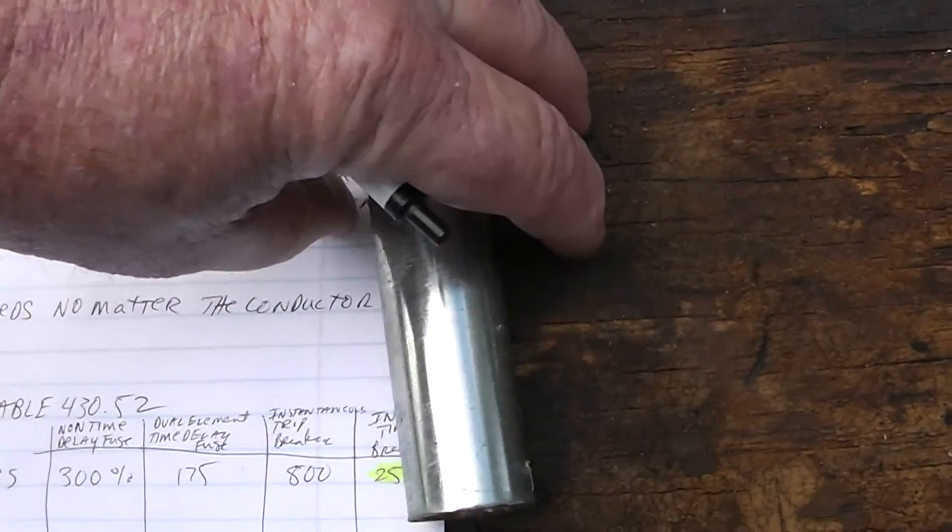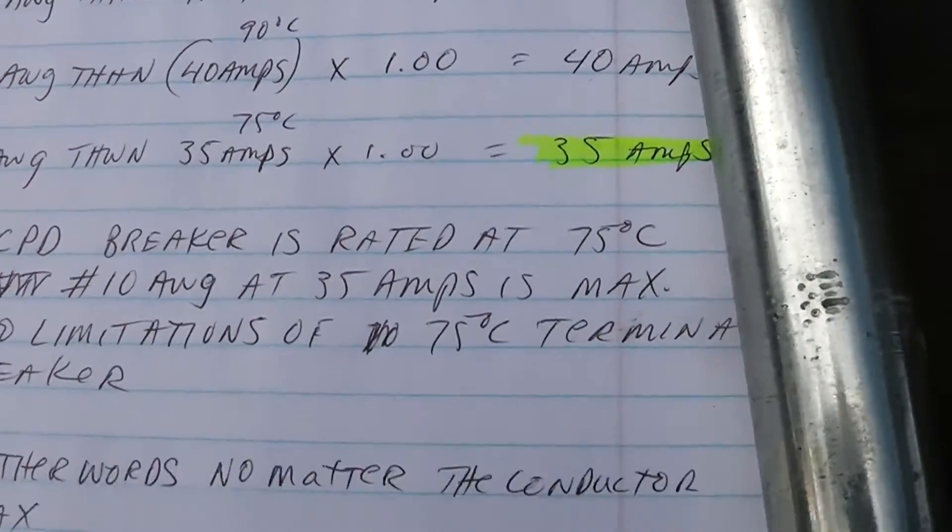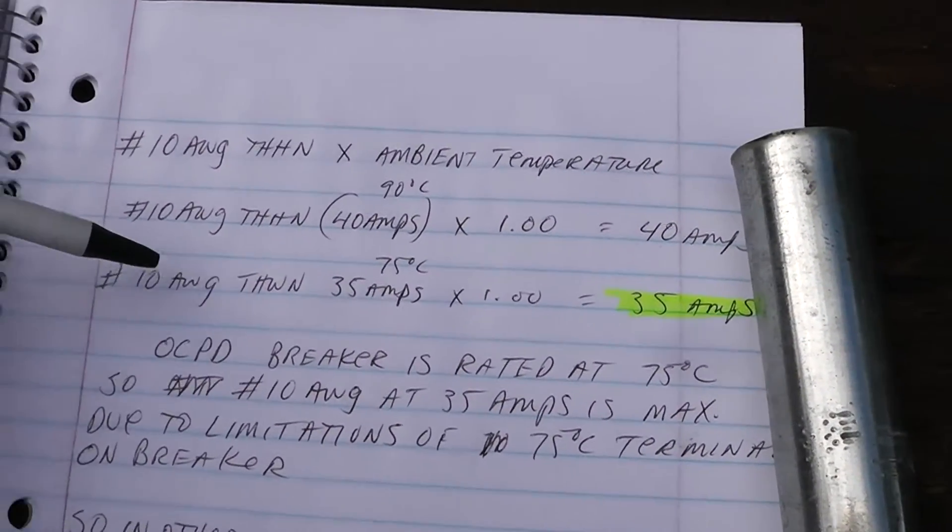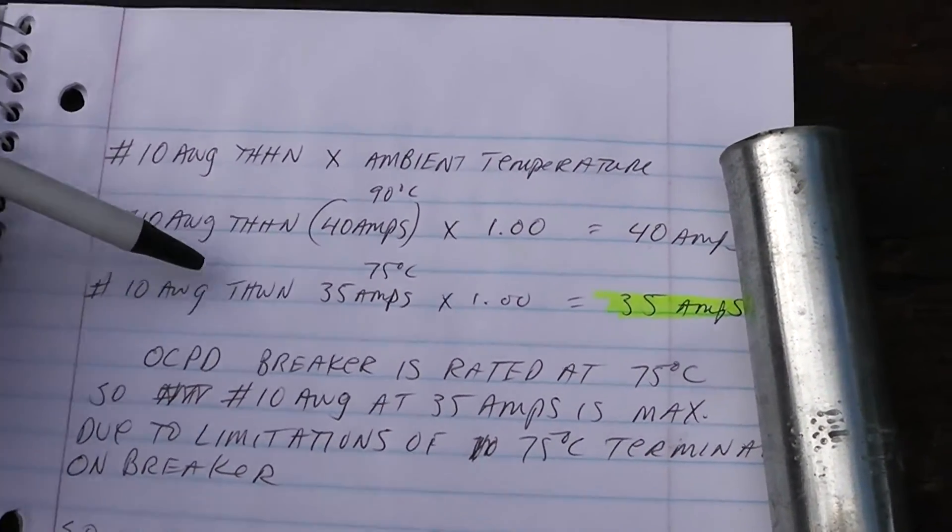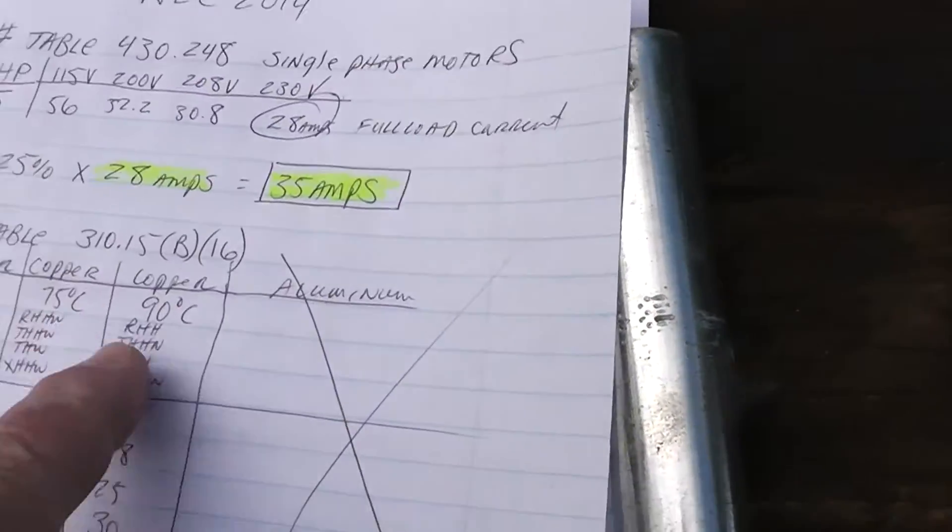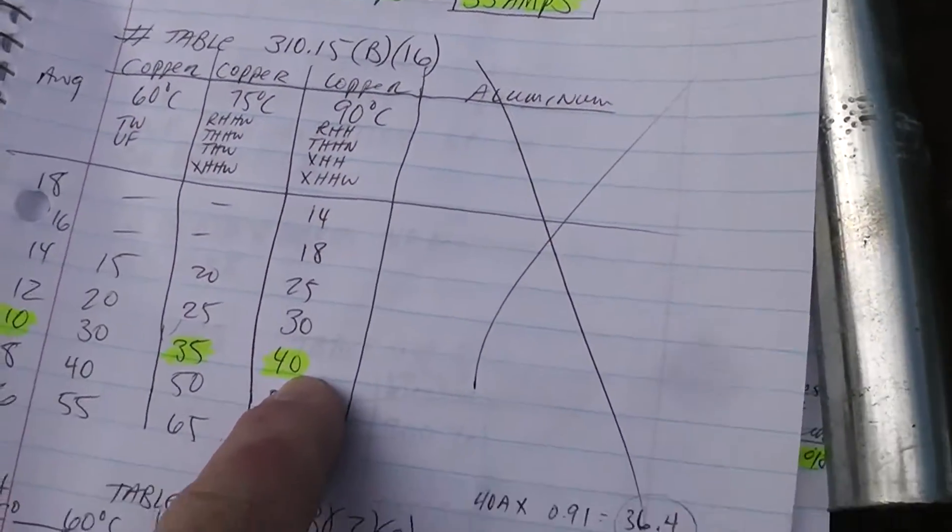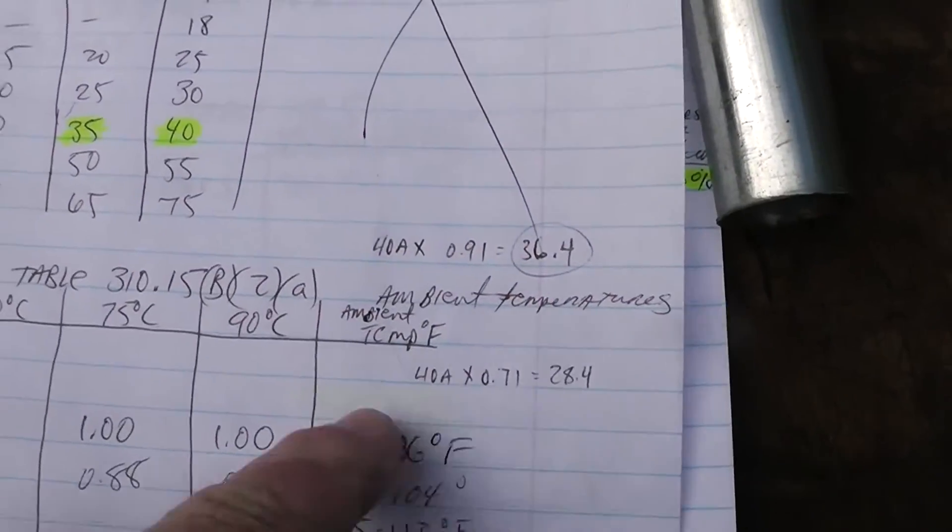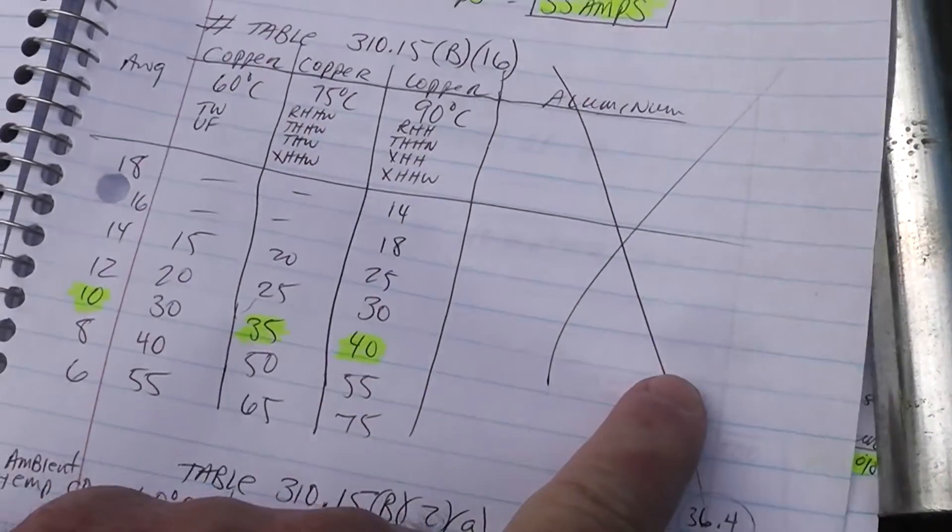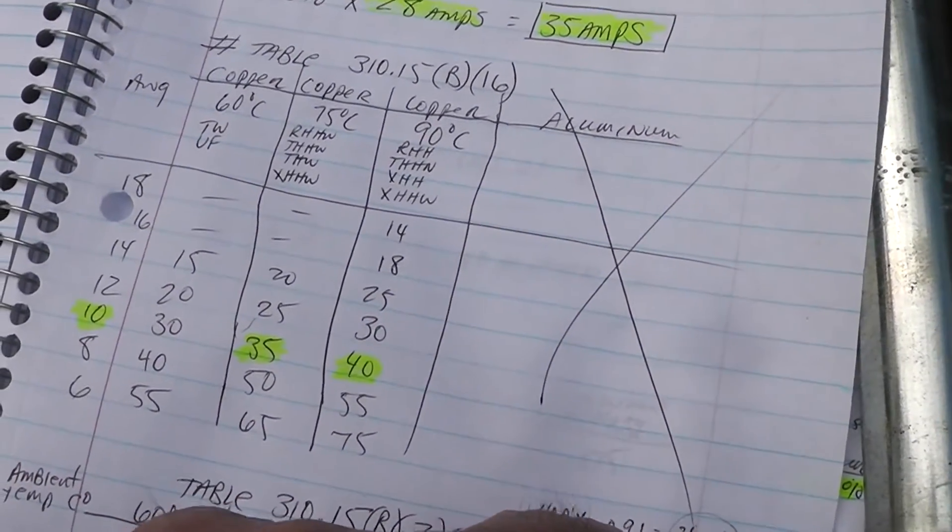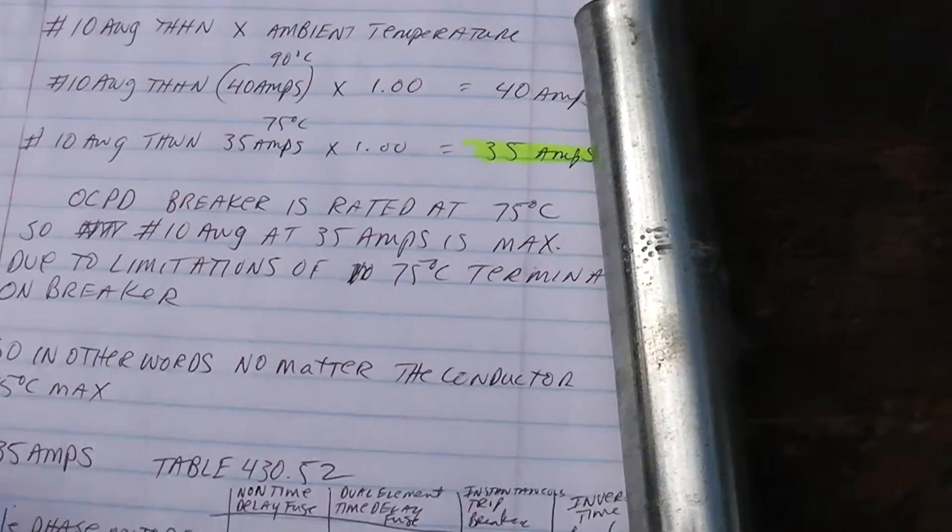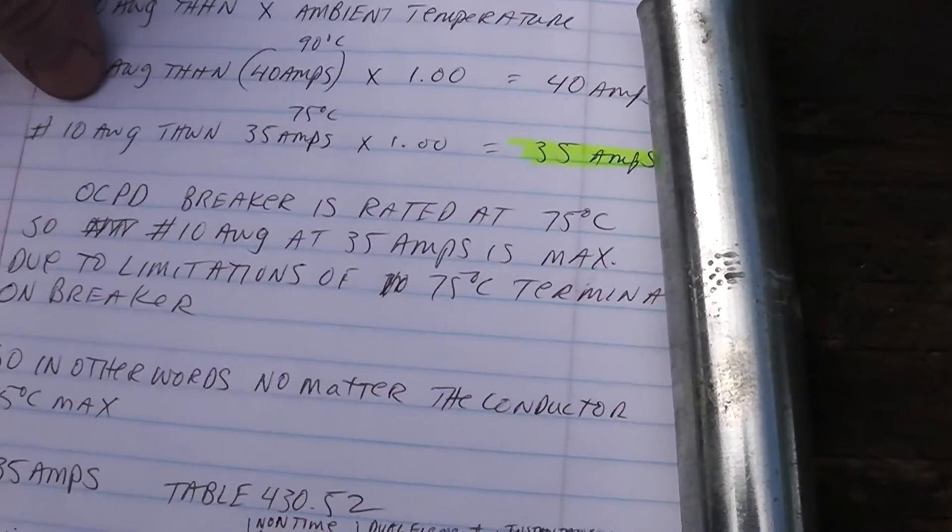Another thing is we are limited by the breaker. The breaker terminals are rated for 75 degrees Celsius. Even though we're using this wire and we can use it to calculate the ambient temperature variations, we can never go above 35 amps on it. So we are maxed out.